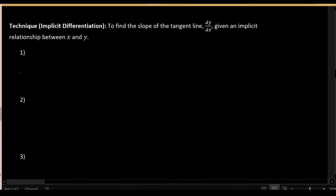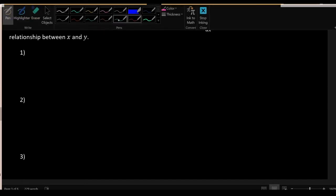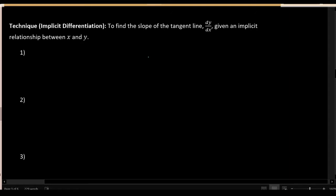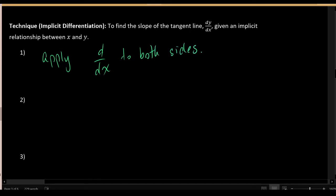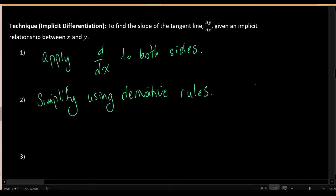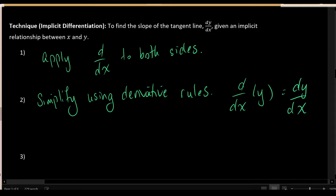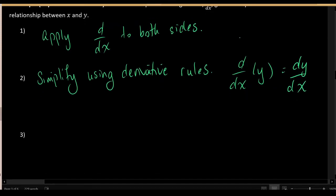Let me outline the general technique and then go into a concrete example. The first step is to take the equation relating x and y and apply d/dx to both sides. Then simplify using the derivative rules, and any time you encounter the derivative with respect to x of y, write that as dy/dx. Finally, solve the resulting equation for dy/dx.